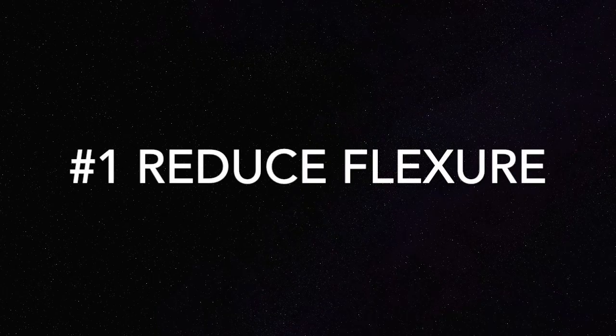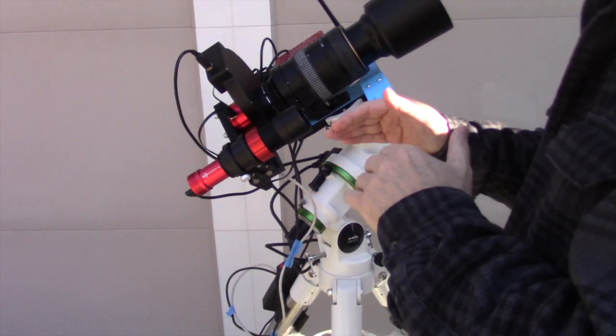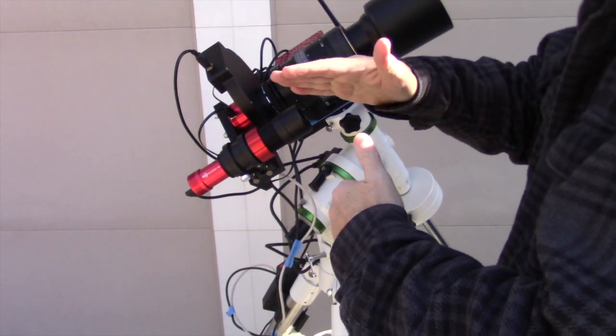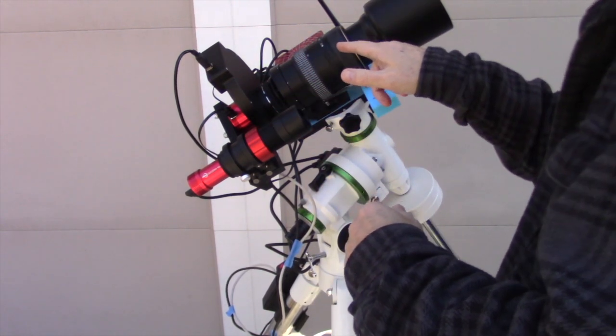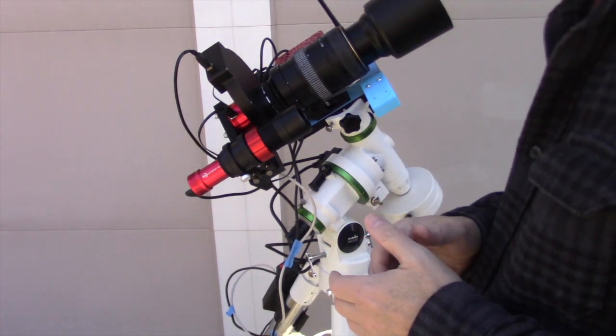Tip number one, reduce flexure. Now flexure, what I'm talking about with flexure is how the guide scope can move independently of your telescope or in this case my lens. Now if it does,